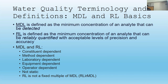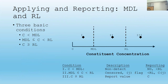Basic stuff — this is not rocket science. What are these categories? What happens when I have a constituent that is below the method detection limit, between the method detection limit and the reporting limit, or greater than the reporting limit? The first condition: it is less than the method detection limit — non-detect, ND. You often see that in the data. It could also be reported as just less than the reporting limit.